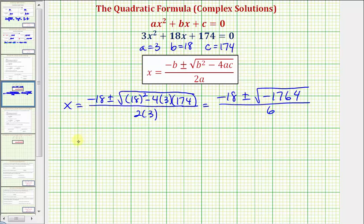Now we want to simplify. Let's write this as negative 18 plus or minus the square root of negative 1764 as 1764 times negative one, divided by 6.